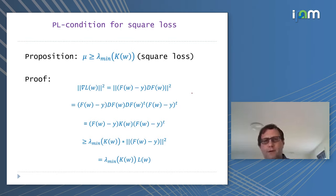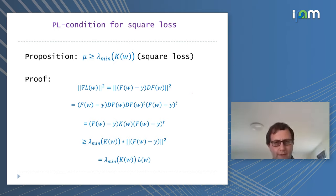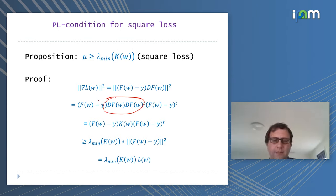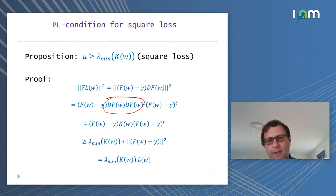How do you prove it? Very simply. You write down the gradient of L(W) — and I should say, this is for the square loss. You write L(W) as a square. When you differentiate it, you get (F(W) - Y) times the derivative of F(W). When you write the square as a vector times vector transpose, you get the kernel. This is a positive semi-definite quadratic form, and its value is bounded by the smallest eigenvalue times ||F(W) - Y||², which is simply the loss.